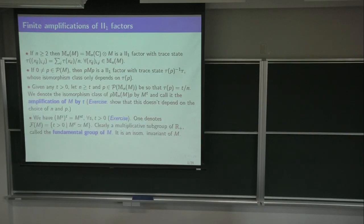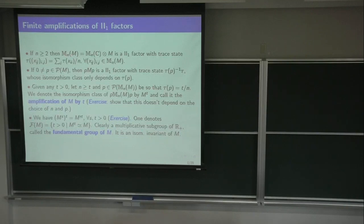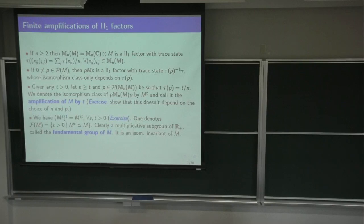First, one does that for the integers. For the case where the amplifying number is t, for t equal to n, this is just the algebra of n by n matrices over M. It can also be viewed as the tensor product of n by n matrices over the scalars with M, with the obvious trace state.